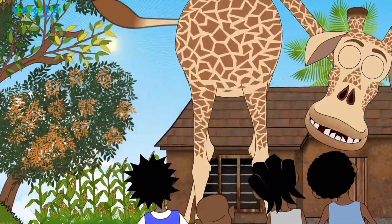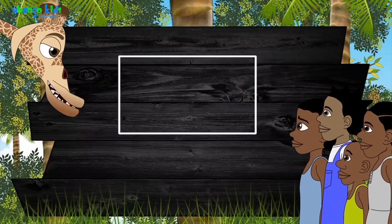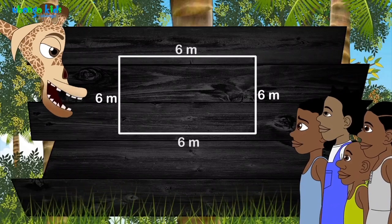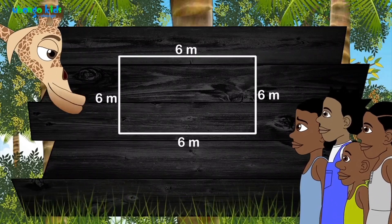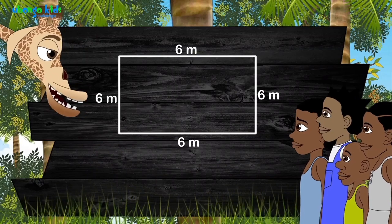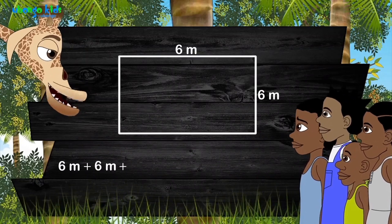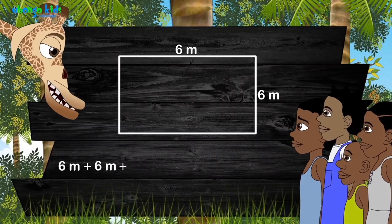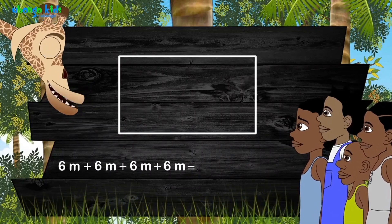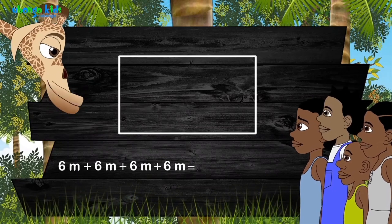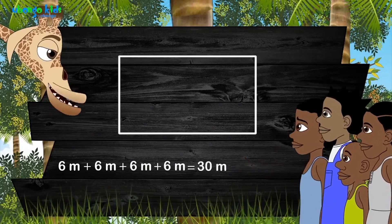Now look so that you can truly understand. Let me start with showing you the perimeter of this rectangle. The length and the width have already been placed. I start adding them up to know the perimeter — the length value here, plus the width value, then I add the length again, and finally the last width. How much is the perimeter? We got 30 meters.